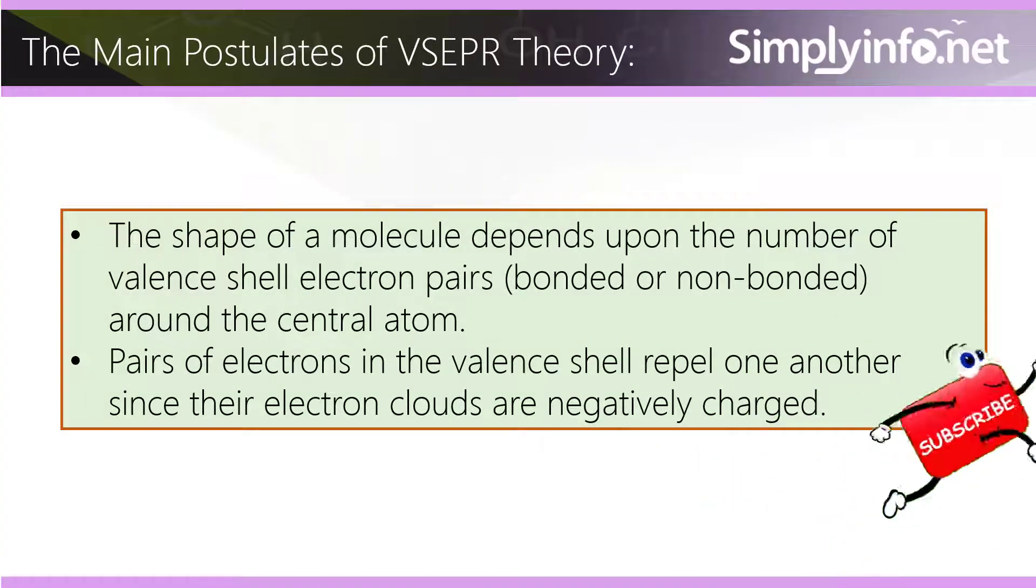The main postulates of VSEPR Theory: The shape of a molecule depends upon the number of valence shell electron pairs, bonded or non-bonded, around the central atom. Pairs of electrons in the valence shell repel one another since their electron clouds are negatively charged.